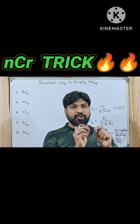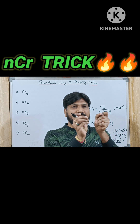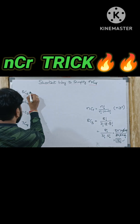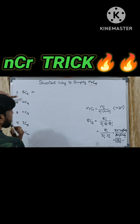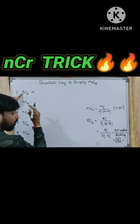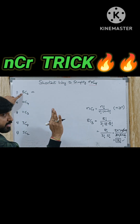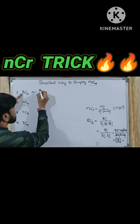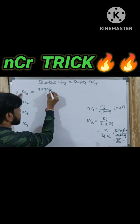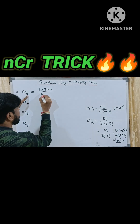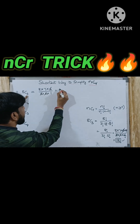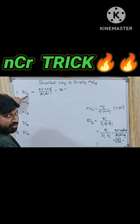But without solving it that way, you can evaluate the answer in the shortest way. There is a simple technique: 8C3 can be written by taking 8 and writing 3 digits in decreasing order — 8 into 7 into 6 — divided by 3 factorial, which is 3 into 2 into 1. The 3 into 2 is 6, which cancels with 6, and 7 into 8 gives your answer of 56.